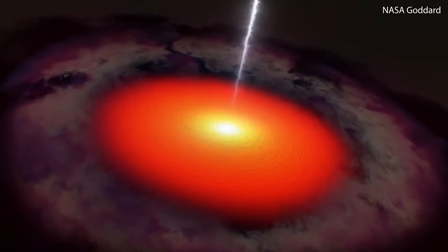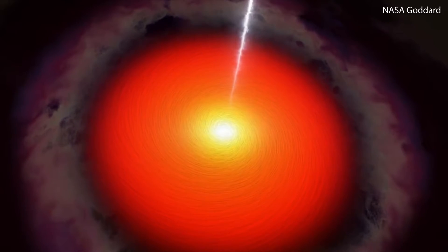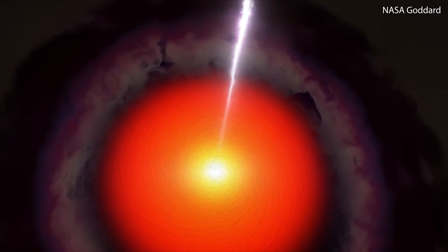The neutrino came from the eruption of a supermassive black hole at the center of a type of galaxy called a blazar. The eruption jetted out particles moving near the speed of light.